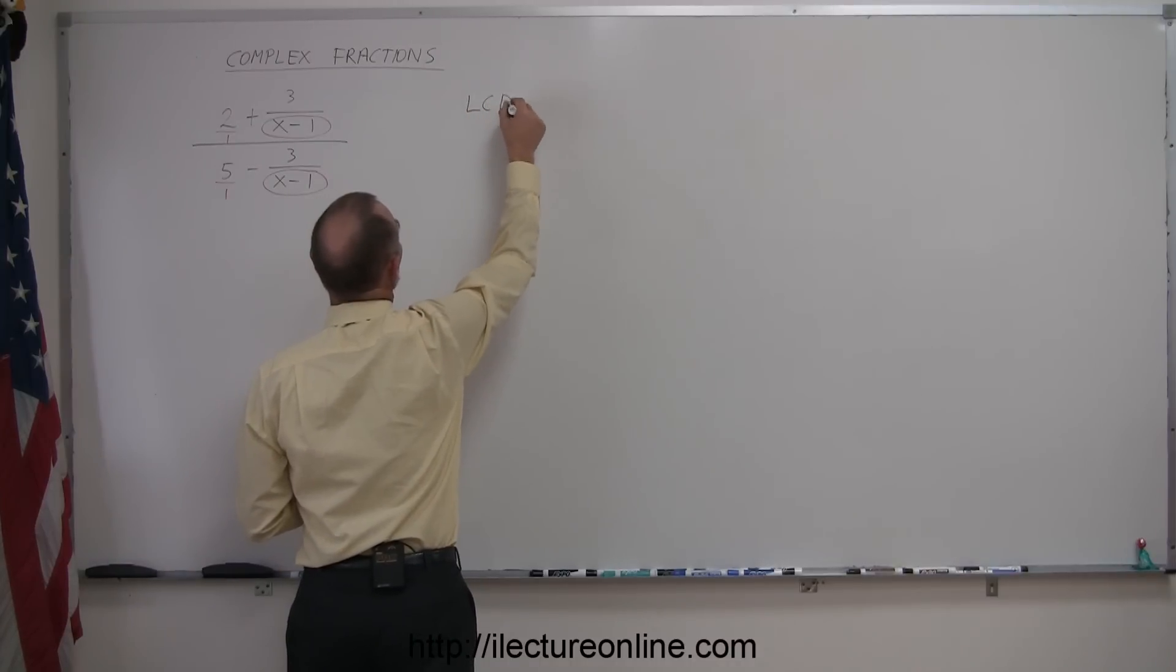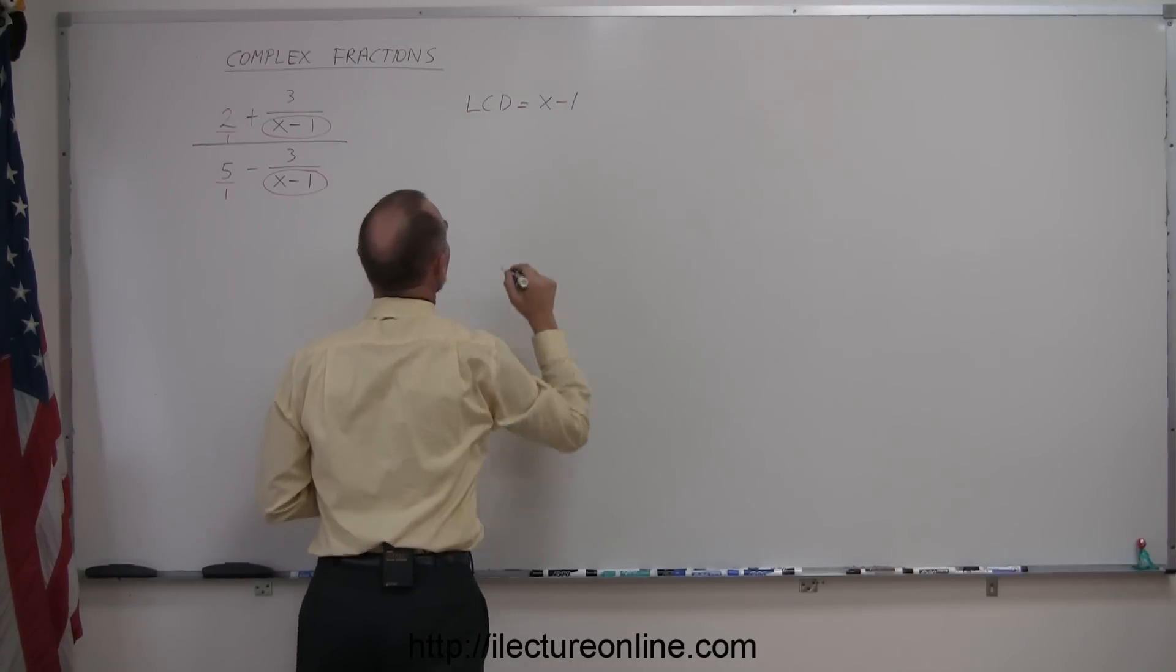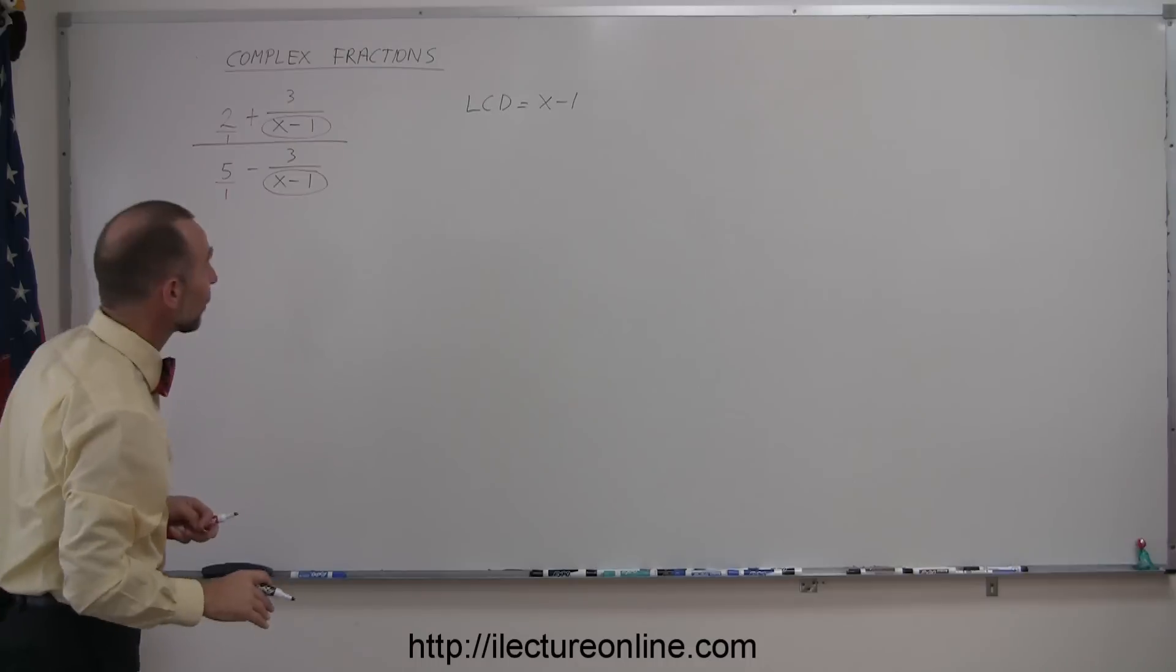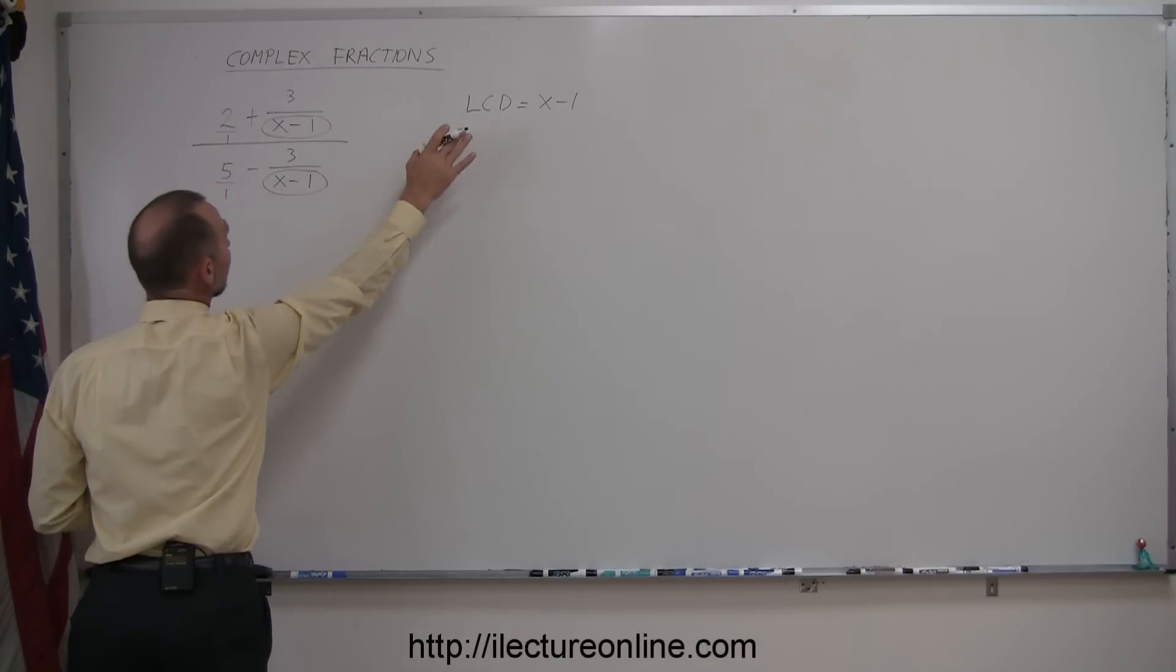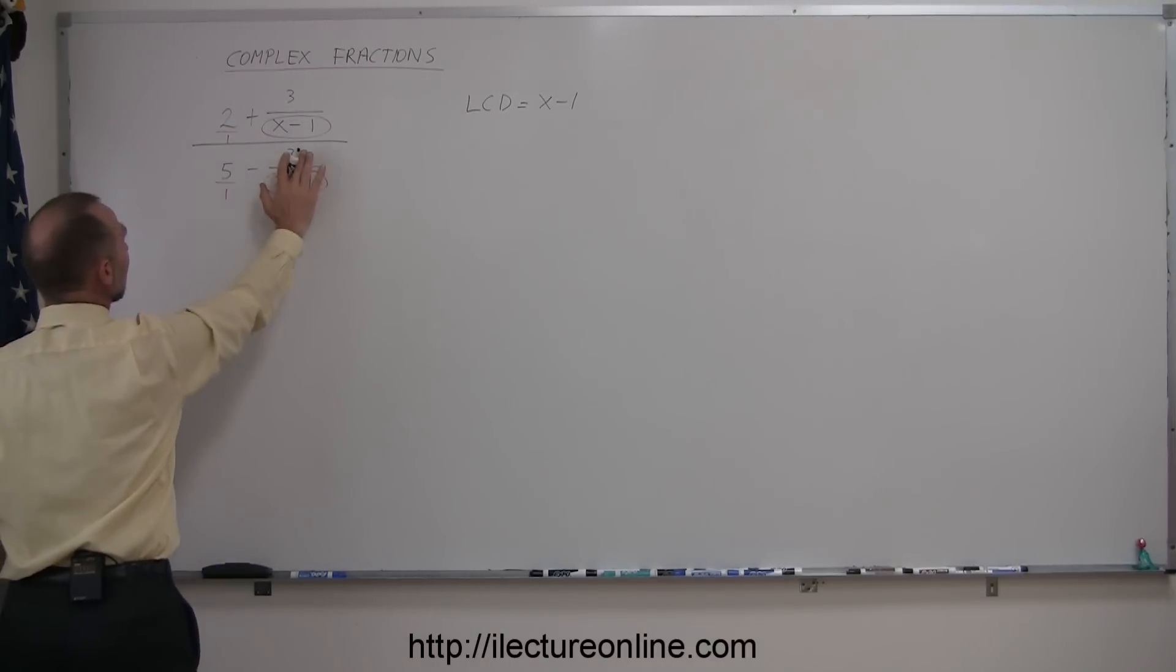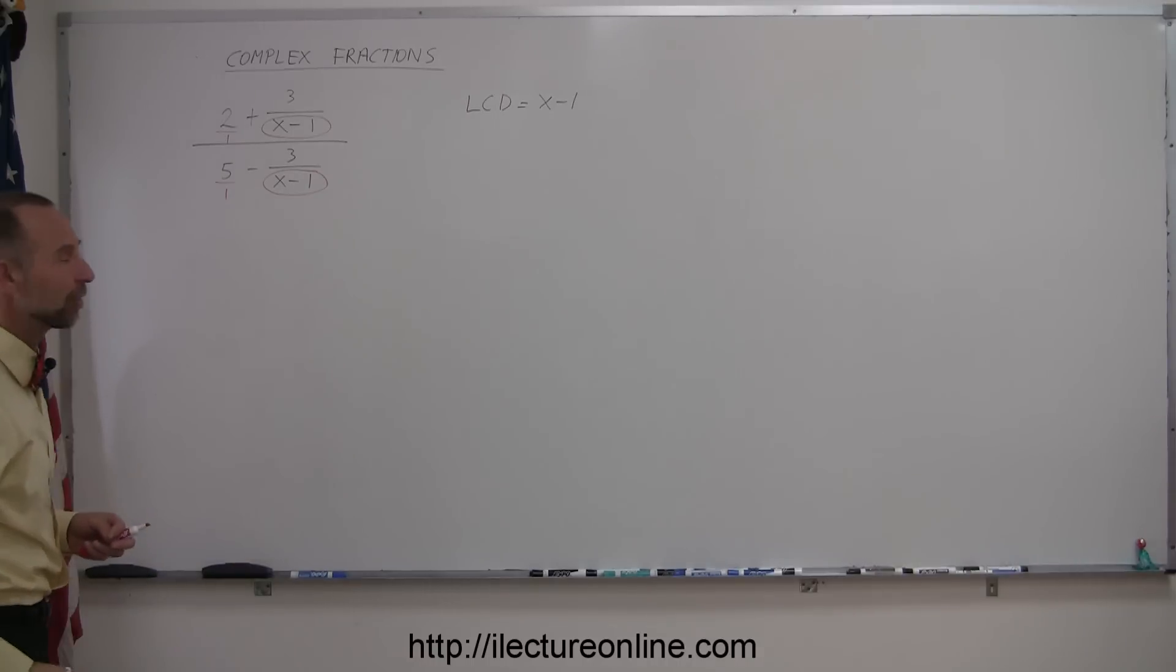The LCD is equal to x minus 1, and the trick that I like to use to solve these problems is to multiply the whole numerator by the LCD x minus 1 and the denominator by the LCD x minus 1.